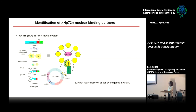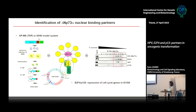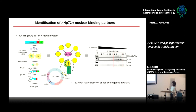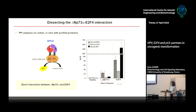This E2F4-p130 complex participates in repression of cell cycle genes in the G0 phase. We validated this finding using interaction analysis on endogenous proteins. We used a cell line stably expressing ΔNp73α fused to an HA tag, isolated nuclei from keratinocytes, performed sucrose gradient fractionation, then co-immunoprecipitation. We found that HA-ΔNp73α co-precipitates all three partners of the complex: E2F4, DP1, and p130.